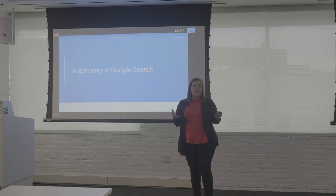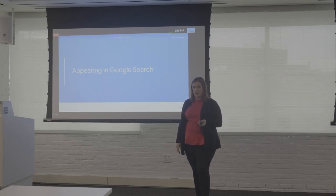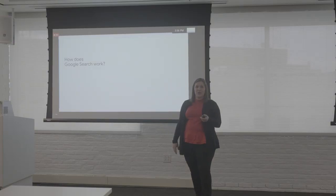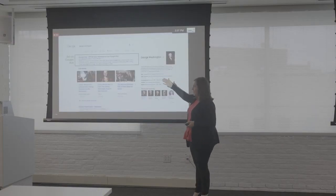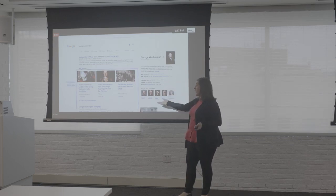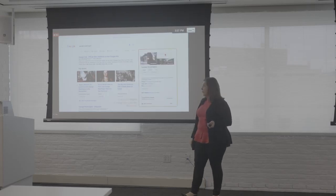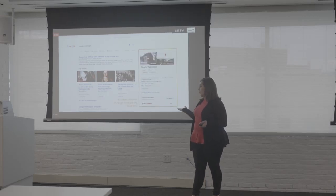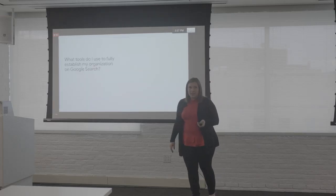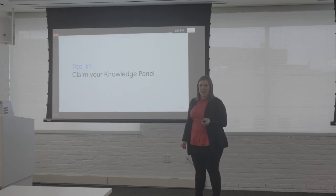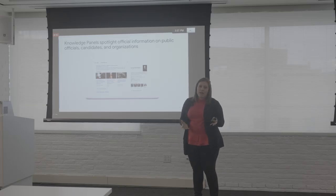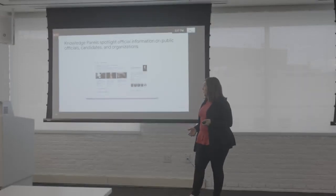We're going to talk about all the ways your organization or principal can appear in Google Search. First, how does Google Search work? Here is a Google Search ad, next are organic results — for example, a search of George Washington shows his knowledge panel with important facts and figures, and also his business profile through Google My Business. To establish your organization on Google Search, you can first claim your knowledge panel, which spotlights official information on public officials, candidates, and organizations.